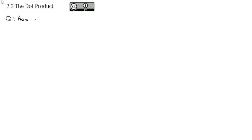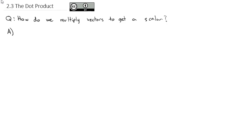In this video, we're going to look at the dot product as we answer the question: how do we multiply vectors to get a scalar or a constant? In other words, when we multiply these vectors together using the dot product, the answer is going to be a scalar, not a vector.